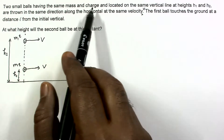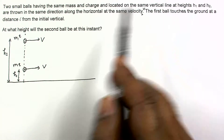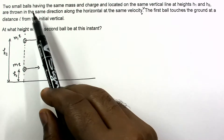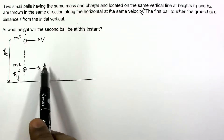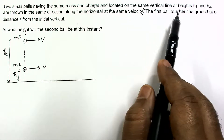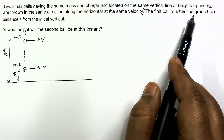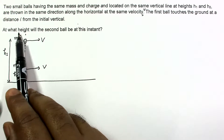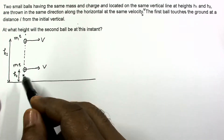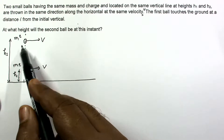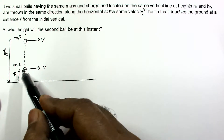Two small balls of the same mass and charge are located on the same vertical line at heights h1 and h2. They are thrown in the same direction along the horizontal at the same velocity v. The first ball touches the ground at a distance l from the initial vertical. At what height will the second ball be at this instant?